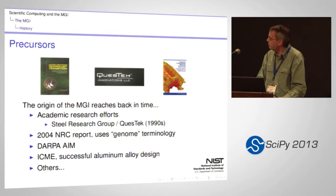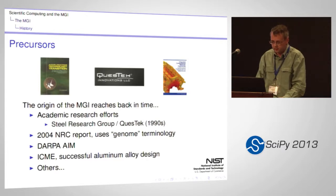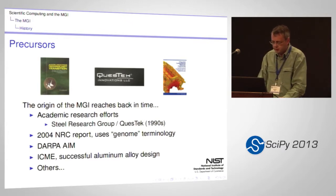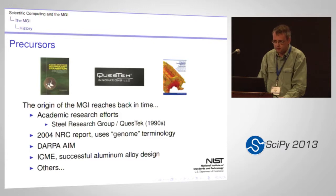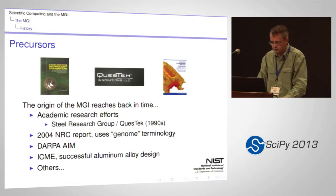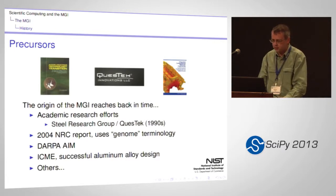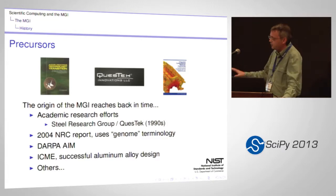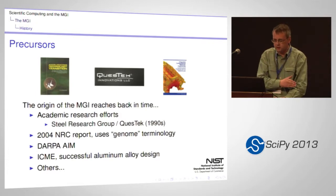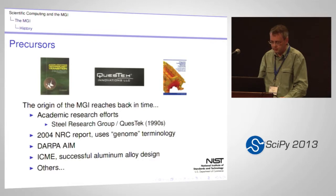There's also been the DARPA AIM project — AIM standing for Accelerated Insertion of Materials — which started a number of years ago and is still ongoing. The ICME project, Integrated Computational Materials Engineering, resulted in a reasonably successful refinement of aluminum alloy design for engine blocks. The application is ultimately lightweighting — making vehicles lighter so you can control them better, make them more fuel efficient, or put power somewhere else — all of which is commercially valuable. I want to capture the idea that a lot of people at a lot of places have been thinking about this kind of thing for a long time.